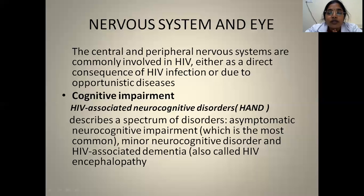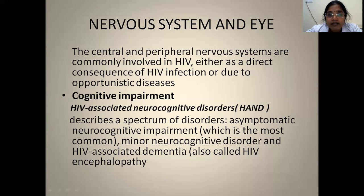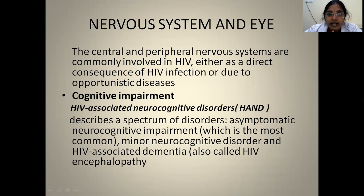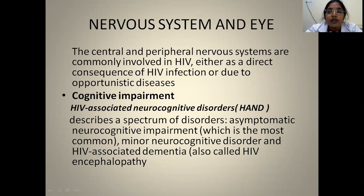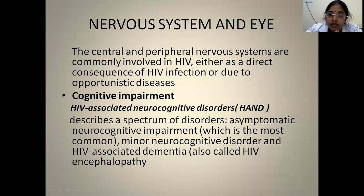Coming to involvement of the central nervous system: both CNS and peripheral nervous system can be involved directly by the virus or due to opportunistic infections. Most AIDS patients have cognitive impairment or memory loss. This is described by the term HIV-Associated Neurocognitive Disorders (HAND), which describes a spectrum including asymptomatic neurocognitive impairment, minor neurocognitive disorder, and severe HIV-associated dementia.